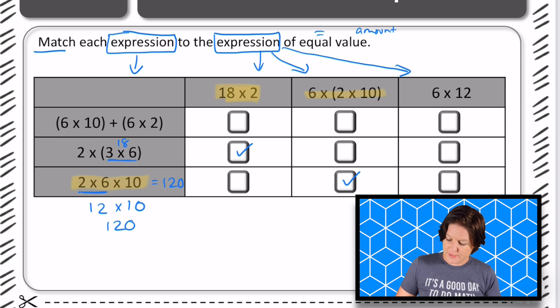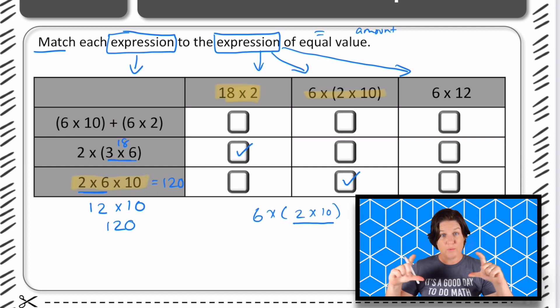Up here, if we did 6 x (2 x 10) and solve the 2 x 10 first, because those are in parentheses, that would be 2 x 10 is twenty. And 6 x 20, well, we know 6 x 2 is twelve. So 6 x 20 is one hundred twenty.